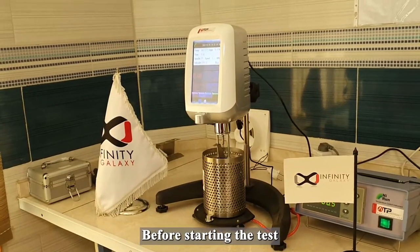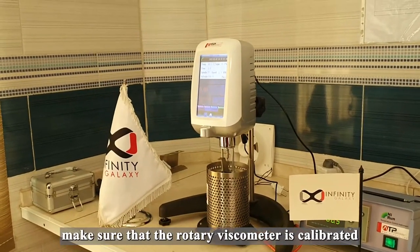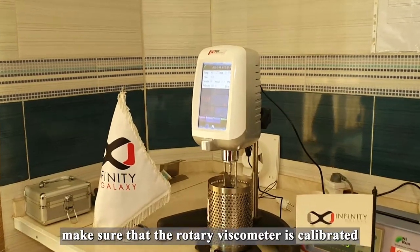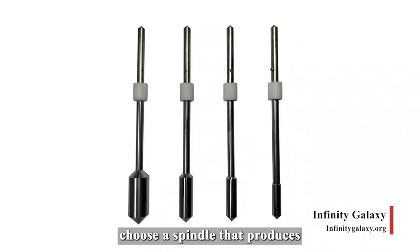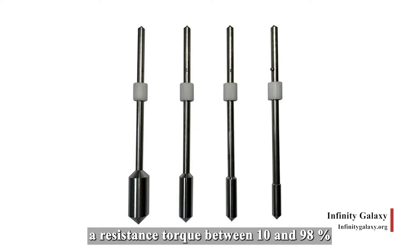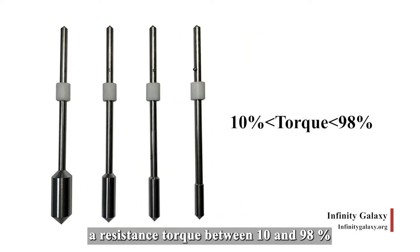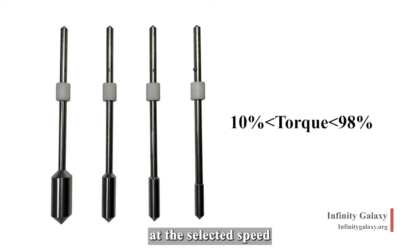Before starting the test, make sure that the rotary viscometer is calibrated. For testing, choose a spindle that produces a resistant torque between 10 and 98 percent of the instrument's capacity at the selected speed.